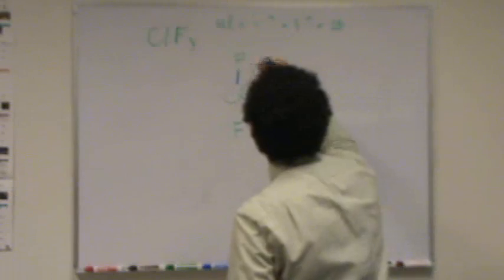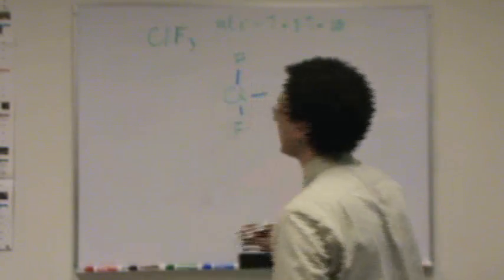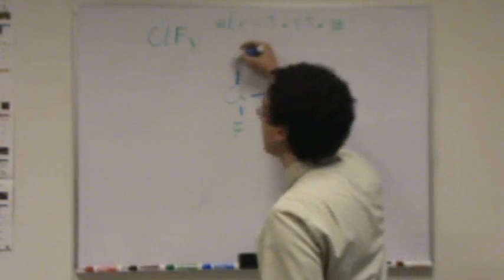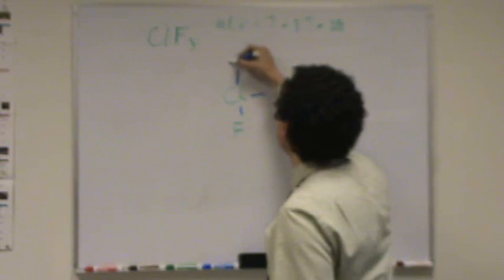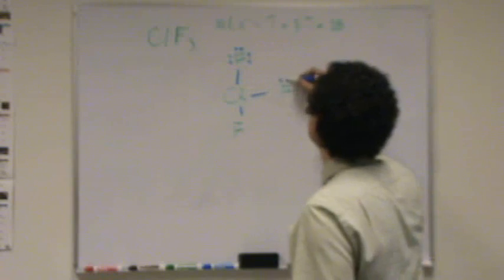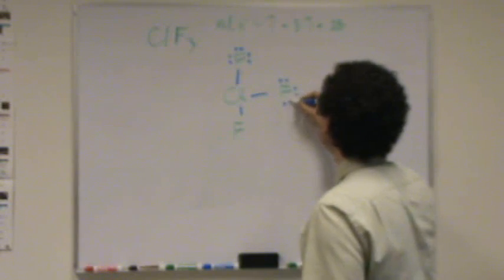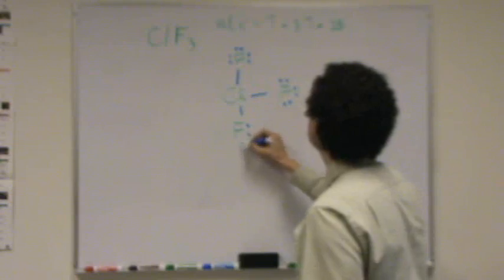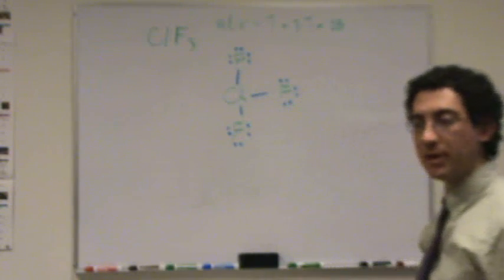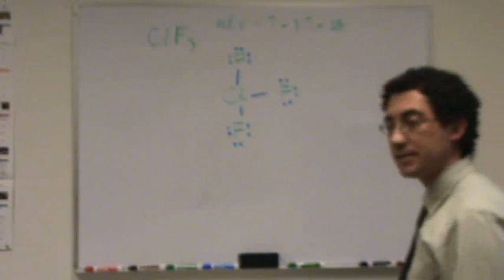Okay, now let's start putting in bonds. Two, four, six. Now we have our skeleton. Six of 28. Now let's keep going with the terminals. Eight, ten, twelve, fourteen, sixteen, eighteen, twenty, twenty-two, twenty-four. So now I'm at twenty-four of twenty-eight.